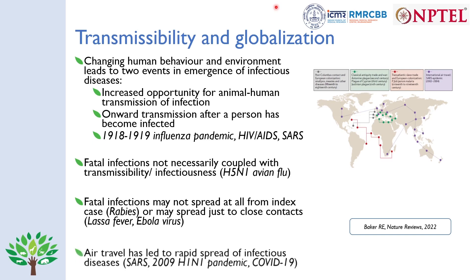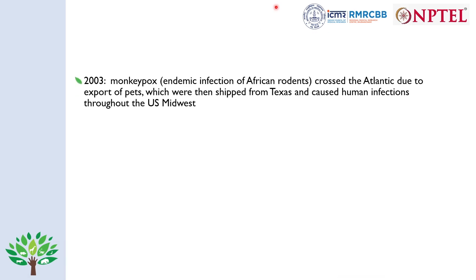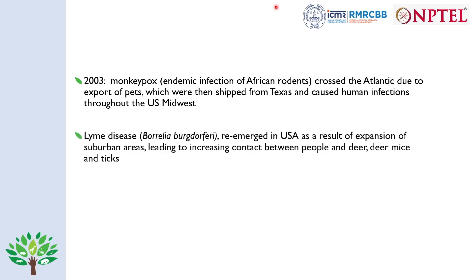During the last few decades, air travel has led to rapid spread of several emerging infectious diseases, especially respiratory infections including SARS, the 2009 H1N1 pandemic, and COVID-19. Another example is the 2003 incident where monkeypox, an endemic infection of African rodents, crossed the Atlantic due to export of pets shipped from Texas to other areas, causing human infections throughout the US Midwest. Lyme disease re-emerged in the USA as a result of expansion of suburban areas, increasing contact between people and deer, deer mice, and ticks.